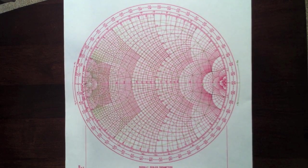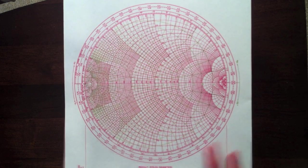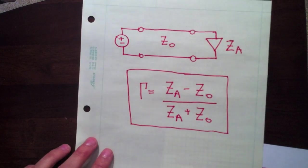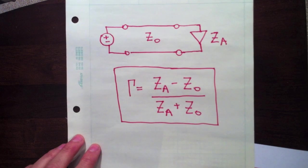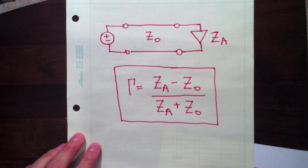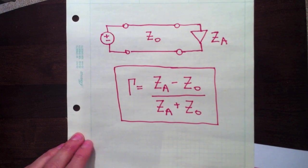So what exactly is this thing? What we're looking at, a Smith chart is basically a polar plot of the reflection coefficient. So what does that mean?